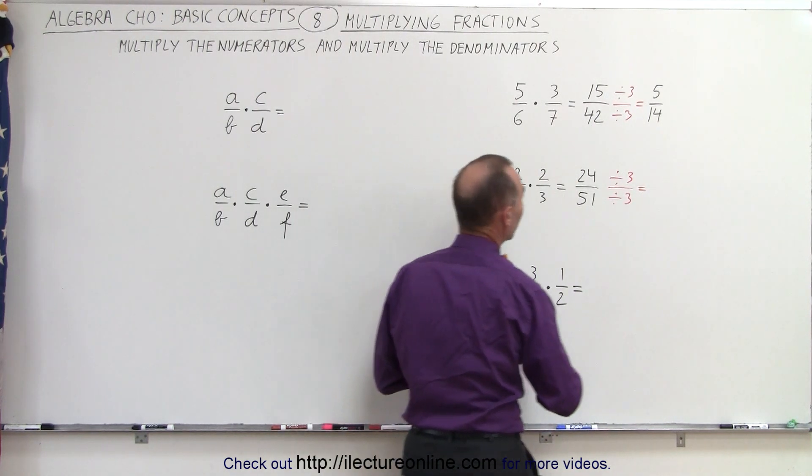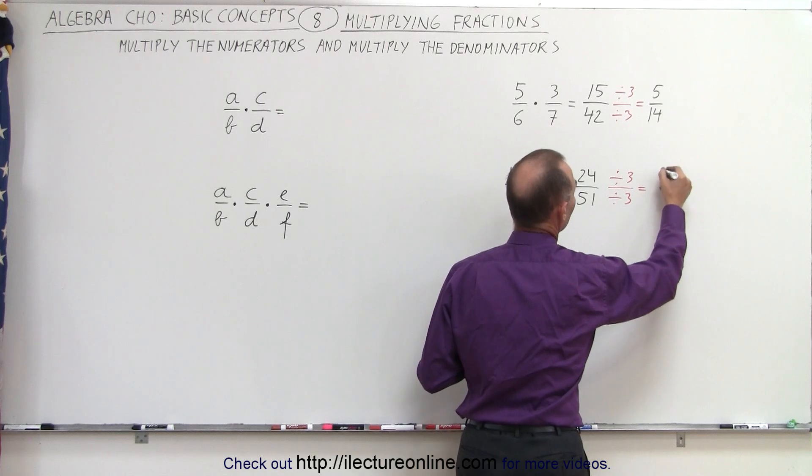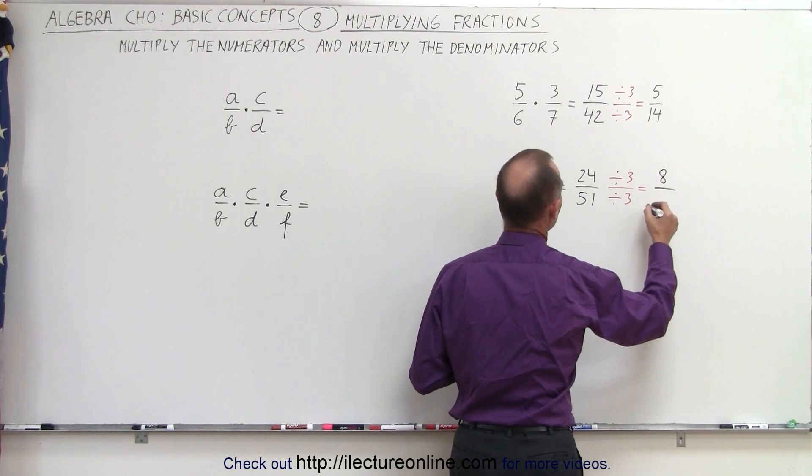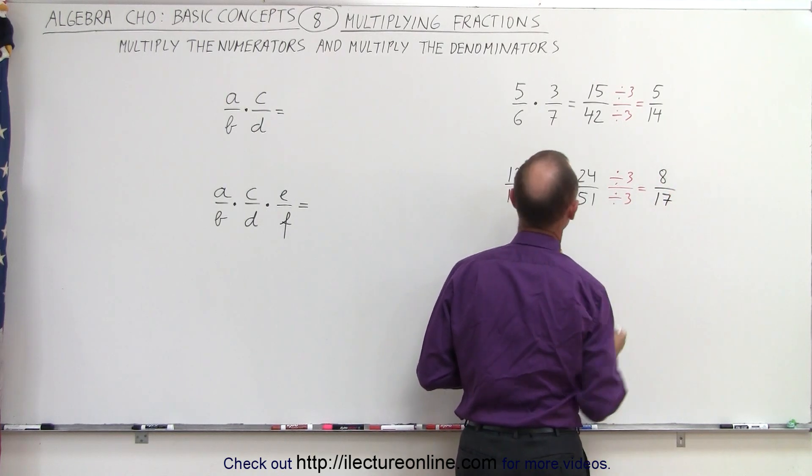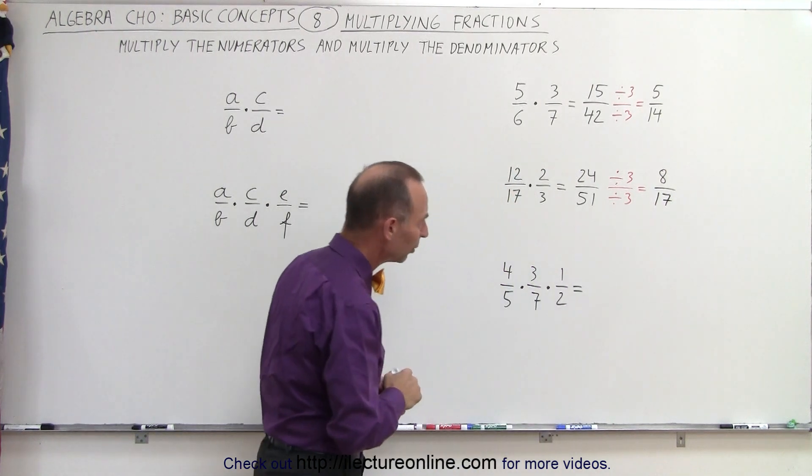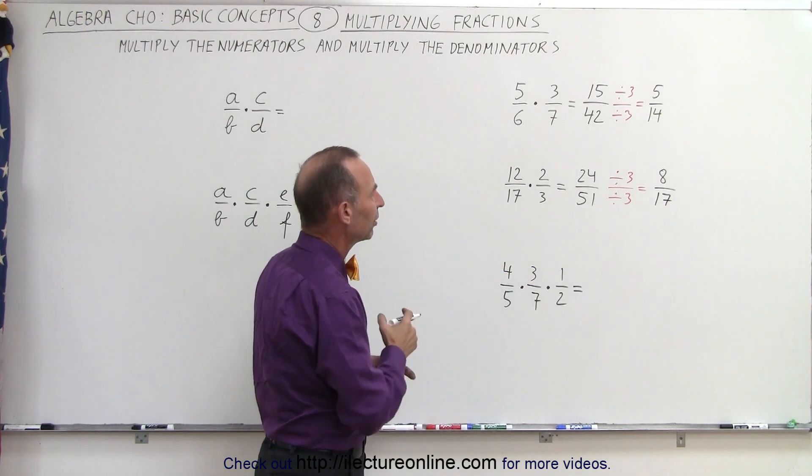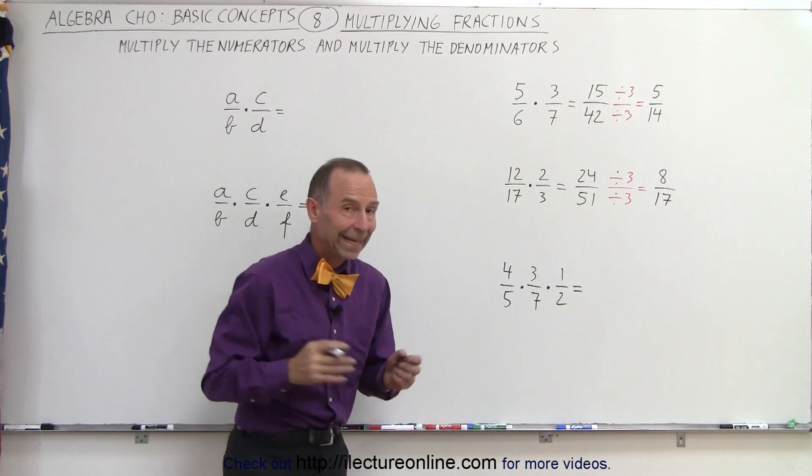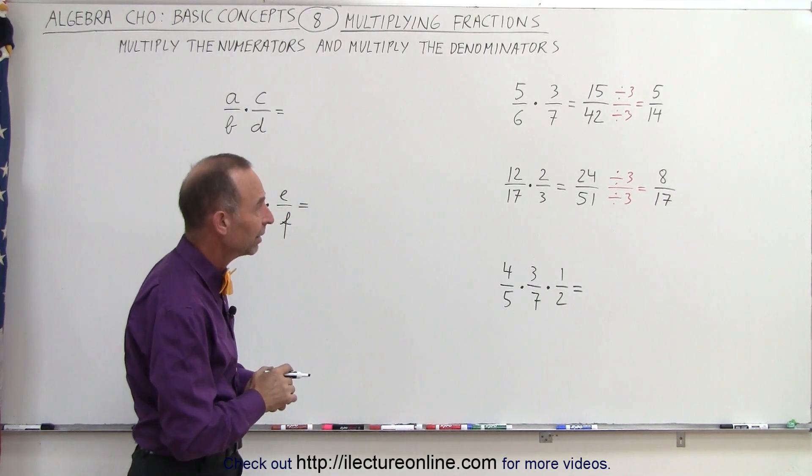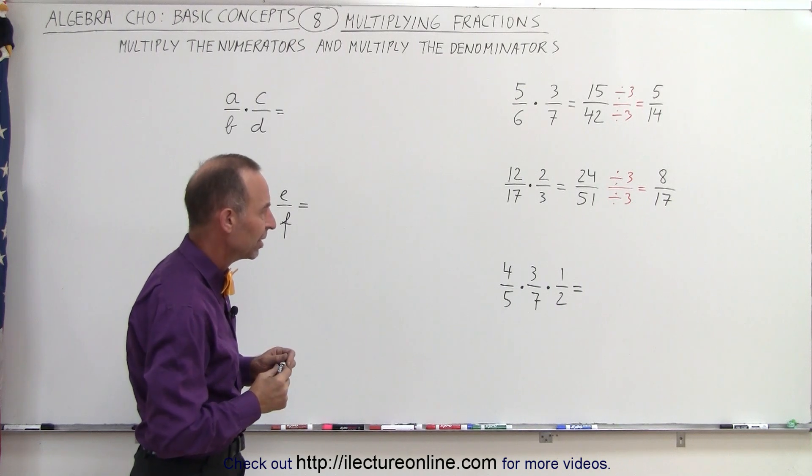24 divided by 3 is 8, and 51 divided by 3 is 17. Since 17 is a prime number, that's as far as we can go. So the end result when we multiply them together and reduce as much as we can is 8 divided by 17.